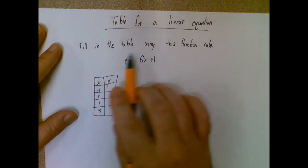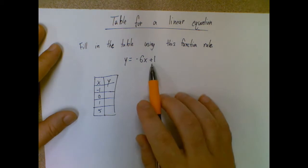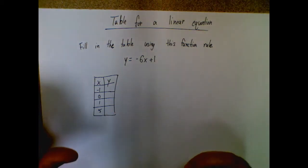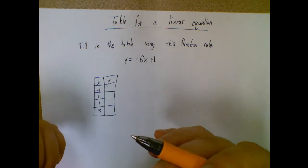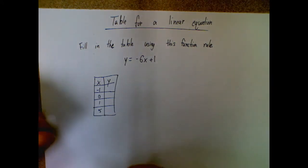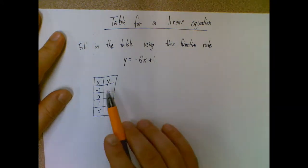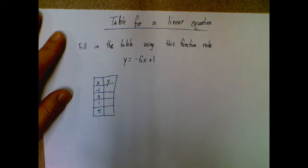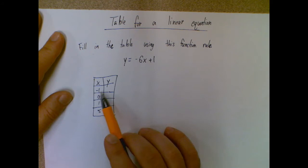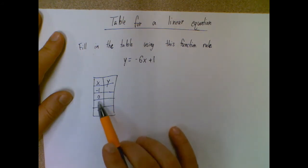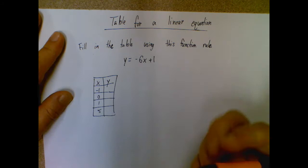So we're going to fill in this table using the function rule, which we normally call equations, but that is specifically telling us in this case that it is a function, which is that special type of equation where each input goes to a single output. So to do this, we're basically just going to evaluate this equation for each one of our four inputs. So we'll do this four times.